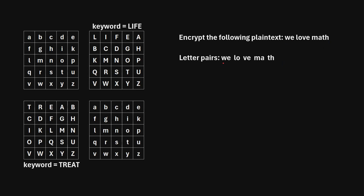Once we split out the plaintext into pairs, we're going to work through each pair. The first pair is W, E. Find the first letter in the pair — so W — and find that in the top left square. Here's W. Then find the next letter in the pair — so E — and find that in the bottom right square. Here's E in the bottom right square. Now to encrypt it, we're first going to write the capital letter where they intersect in the top right square. We can see that they intersect at the capital letter Z. So the first letter in our ciphertext is going to be Z.